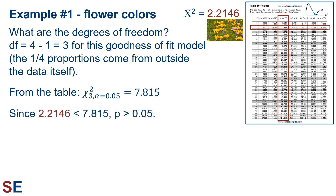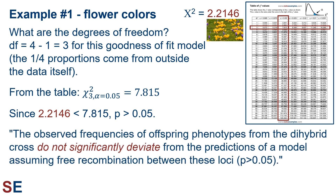Since 2.2146 is less than 7.815, p is larger than 0.05. We therefore conclude: the observed frequencies of offspring phenotypes from the dihybrid cross do not significantly deviate from the predictions of a model assuming free recombination between these loci. This indicates that the loci for flower shape and color are not linked — they seem to be on different chromosomes, or if on the same chromosome, very far apart.